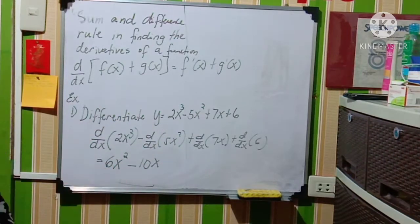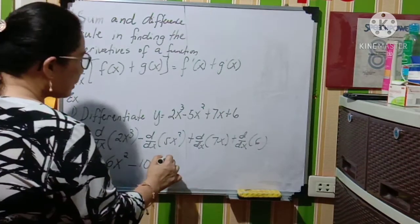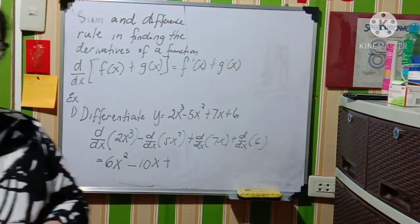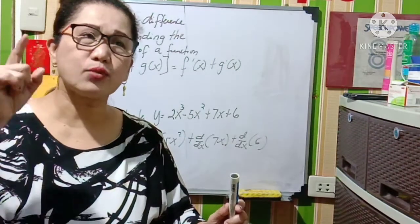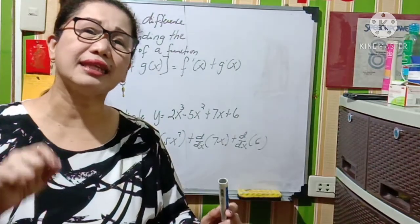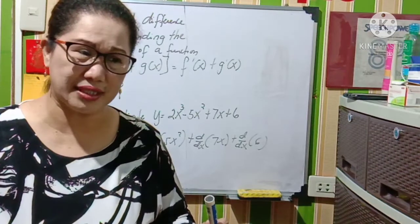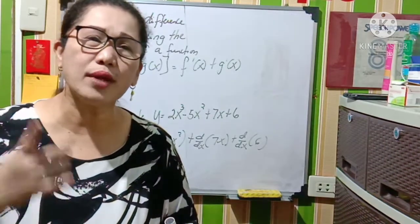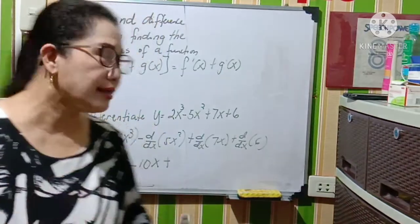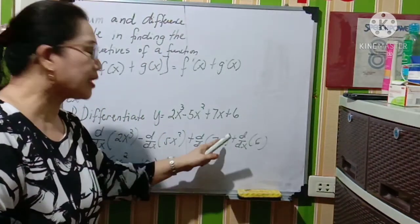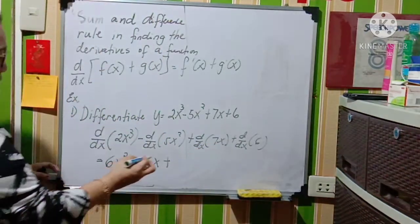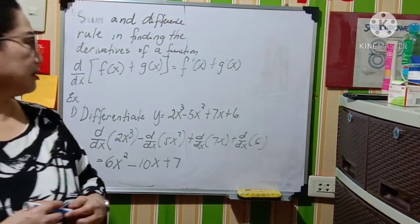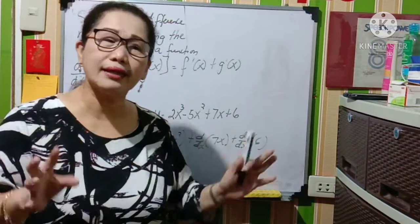Plus the derivative of 7x. We know that we will be using the identity rule in getting the derivative. When we use identity rule, we substitute 1 for x. So 7 times 1 will give you 7.